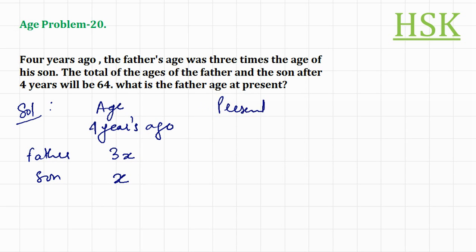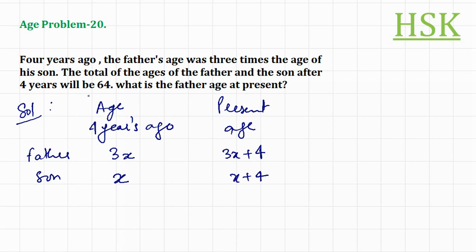Now the present age — the age right now — would be equal to 3x plus 4 and x plus 4. The total of the ages of father and son after four years would be 64.